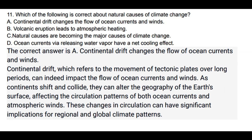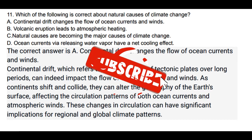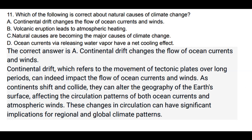Question 11: Which of the following is correct about natural causes of climate change? Options: a) Continental drift changes the flow of ocean currents and winds. b) Volcanic eruption leads to atmospheric heating. c) Natural causes are becoming the major causes of climate change. d) Ocean currents via releasing water vapor have a net cooling effect. The correct answer is a. Continental drift, which refers to the movement of tectonic plates over long periods, can impact the flow of ocean currents and winds. As continents shift and collide, they alter the Earth's geography, affecting the circulation patterns of both ocean currents and atmospheric winds, with significant implications for regional and global climate.